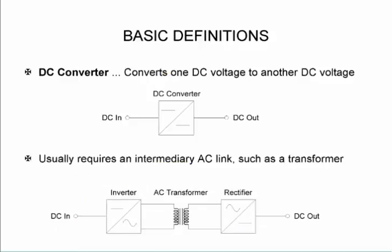A DC converter converts one DC voltage to another DC voltage and that usually requires an intermediary AC link. So we've got a high frequency AC transformer if it's a switch mode power supply that sits in the middle which helps us to convert the voltage levels from whatever the input is to a DC output.